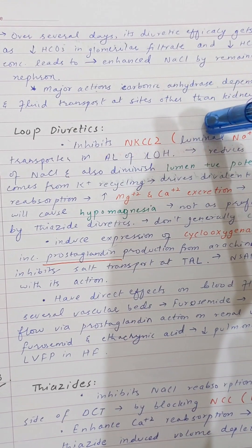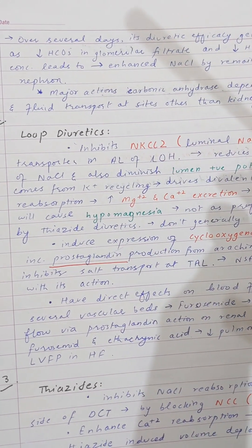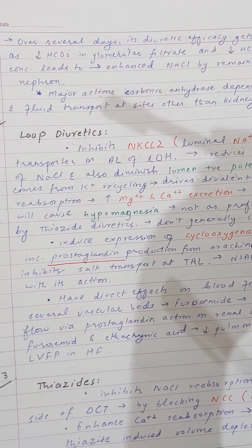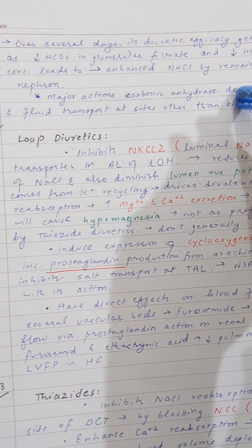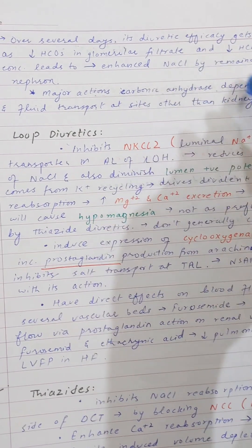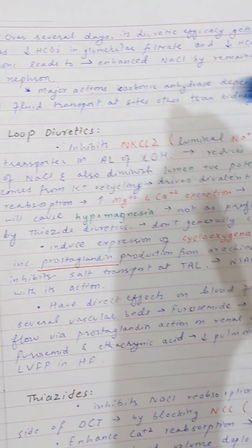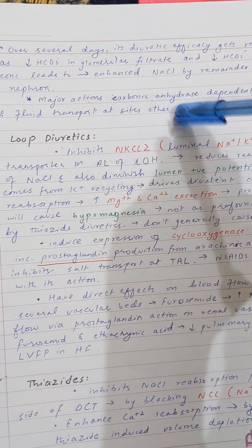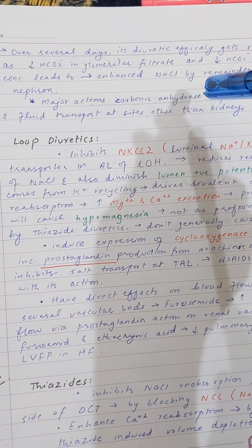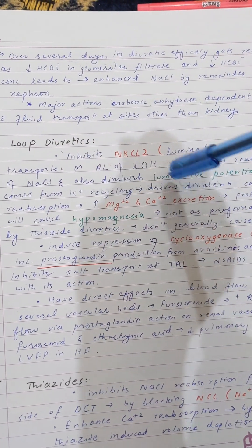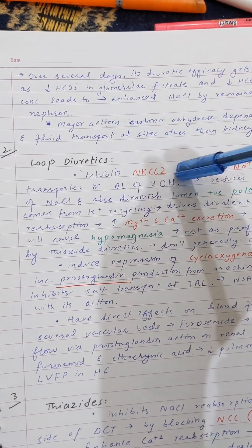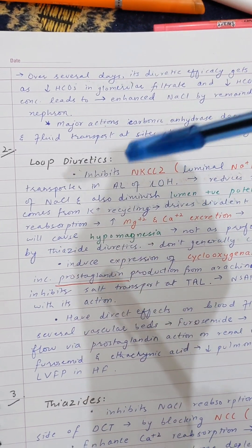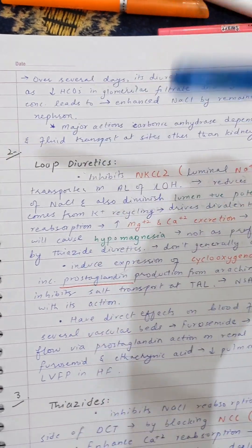The diuretic function of carbonic anhydrase inhibitors is limited because resistance to diuresis develops with continuous use of these inhibitors. The decreased bicarbonate concentration leads to enhanced reabsorption by the remainder of the nephron, limiting diuresis. Carbonic anhydrase inhibitors also have extra-renal effects since these enzymes are found in many tissues — for example, in the eye, where bicarbonate ions are secreted into the aqueous humor.